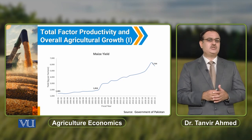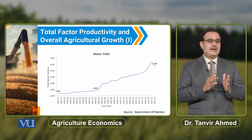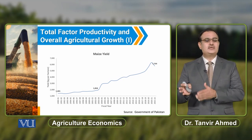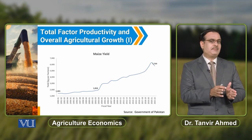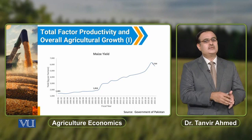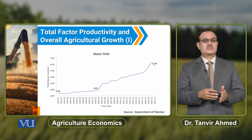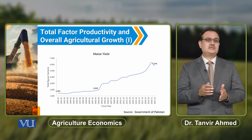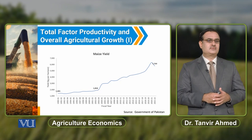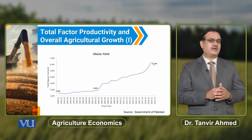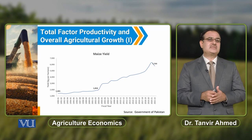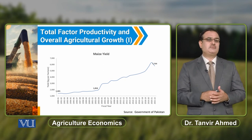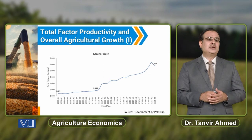What is the increase in maize yield? It is more than two times. You can say that during this time period, yield increased by more than two times — from 1,401 kg per hectare to a significantly higher level by 2021–22.